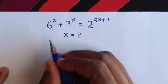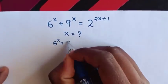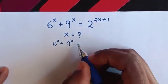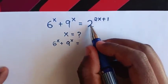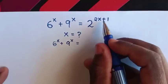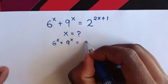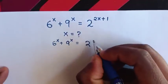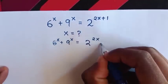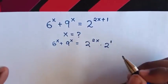From 6 power x plus 9 power x is equal to 2 power of 2x plus 1. This is the same as multiplication of exponents, so it will be 2 power of 2x times 2 power of 1.